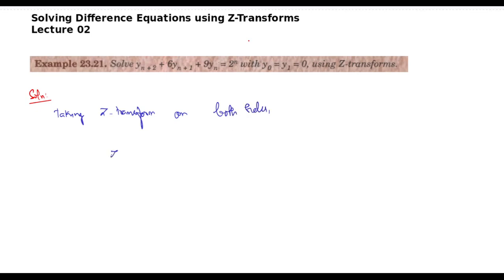So what we get is: Z is linear, so I can write Z{y[n+2]} + 6·Z{y[n+1]} + 9·Z{y[n]}, which is equal to Z{2^n}.